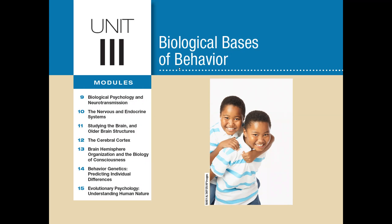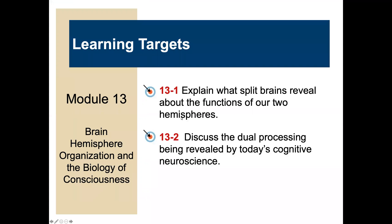Welcome back to module number 13 of unit 3, Biological Basis of Behavior. We're going to be going over information about brain hemisphere organization and the biology of consciousness, talking a little bit about some of the history of what we know about the different brain hemispheres. The learning targets for today are to be able to explain what split brains reveal about the functions of our two hemispheres and to discuss the dual processing being revealed by today's cognitive neuroscience.